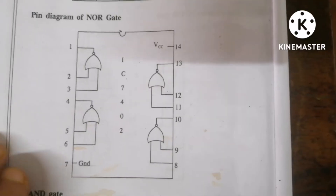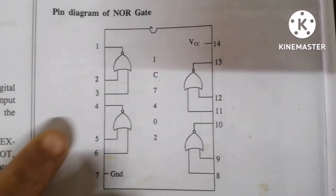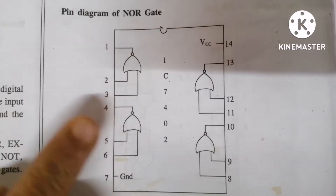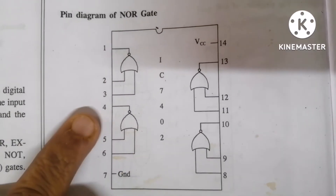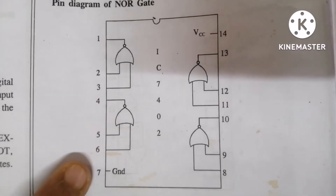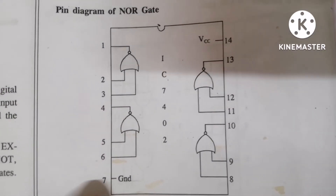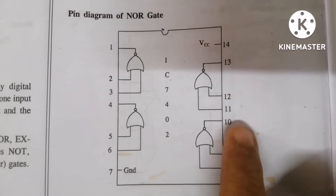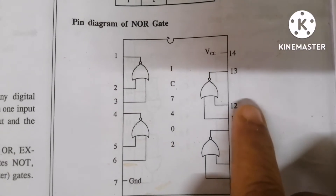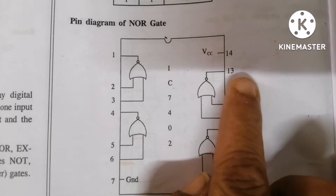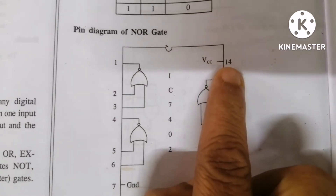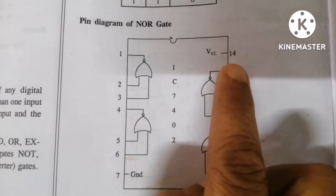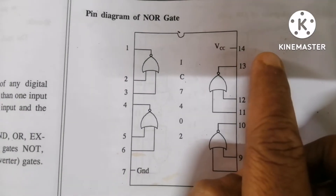This is the pinout diagram for the NOR gate IC. One important change here: pin number 1 is output, 2 and 3 are inputs; pin 4 is output, 5 and 6 are inputs; pin 7 is ground; pins 8 and 9 are inputs, 10 is output; pins 11 and 12 are inputs, 13 is output; and pin 14 is VCC. There is no change in VCC and ground — pin 7 is ground, pin 14 is VCC.